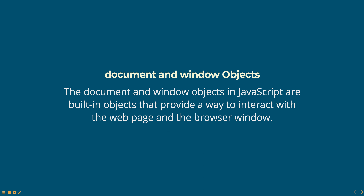Hello everyone. Today we are going to talk about document and window objects in JavaScript, part of a web technologies course. The document and window objects in JavaScript are built-in objects that provide a way to interact with the web page and the browser window. They are the root objects of the Document Object Model and the Browser Object Model respectively.